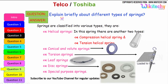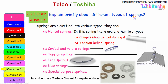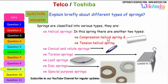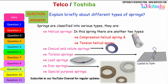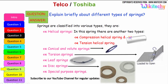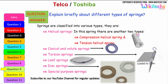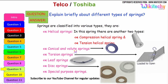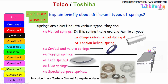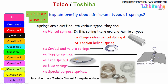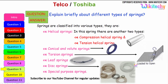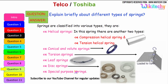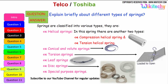Now let us see briefly the different types of springs. Springs are classified into various types: helical springs — which include compression helical springs and tension helical springs; conical volume springs; torsion springs; leaf springs; disk springs; and special purpose springs. These are the different types of springs available.